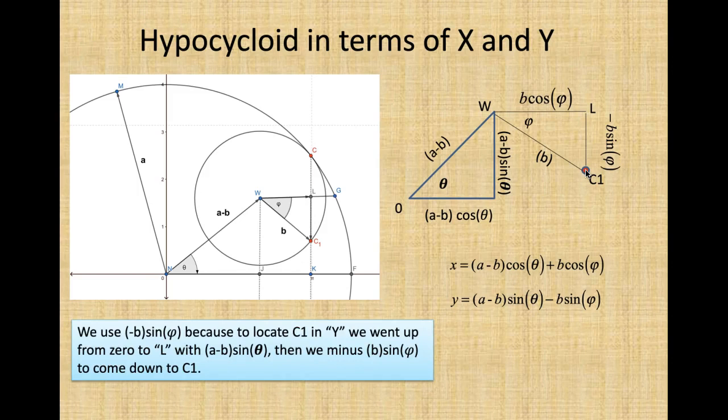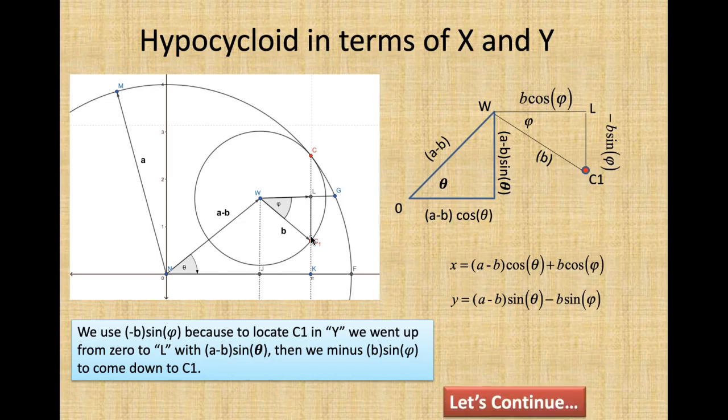We use minus B sine phi because to locate C1 in Y, we went up from 0 to L with (A minus B) sine theta. Then we minus B sine phi to come down to C1. I want you to know why that minus sine was there.